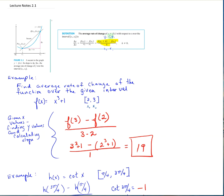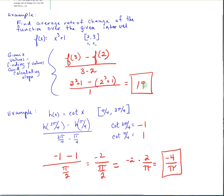The average rate of change with respect to x over the interval from x1 to x2 is the change in y's — delta y is f of x2 minus f of x1 over the change in x, that's x2 minus x1. We can also write f of x1 plus h, because x2 is x1 plus h units in our picture, minus f of x1. That should look familiar — y minus y over x minus x. That's slope, which is an average rate of change.